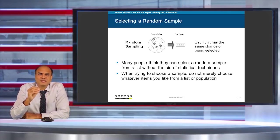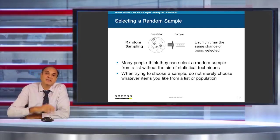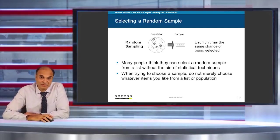Although it looks like a very simple technique, it's sometimes difficult to execute. When trying to choose a sample, don't merely choose whatever items you like from a list of population, but select the items randomly. If you are doing that, we will say you are using simple random sampling.